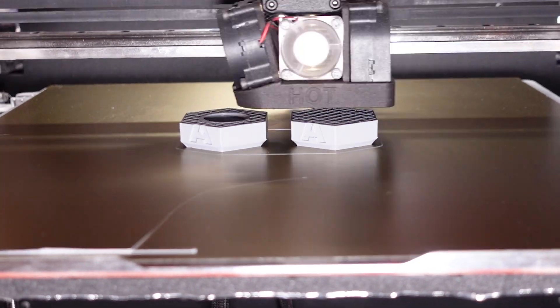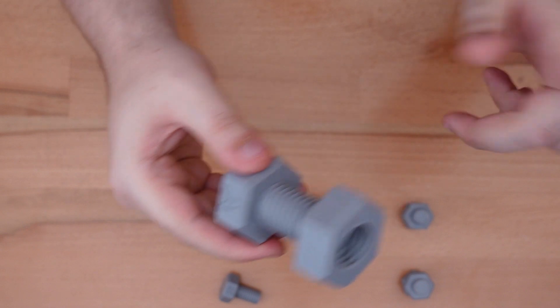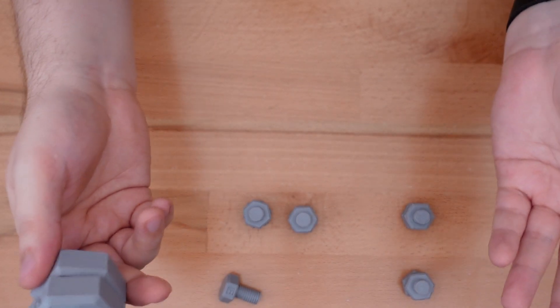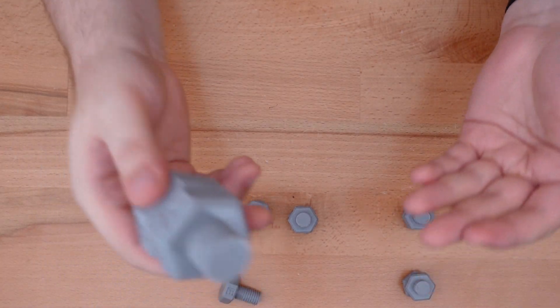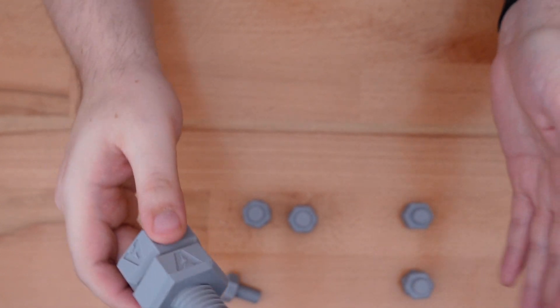Another consideration is scaling prints. This Type A bolt was printed at 200% scale and is a super easy fit. So any design that you scale up won't need as much or any clearance. But if you scale an existing design down, that old clearance might not be enough.